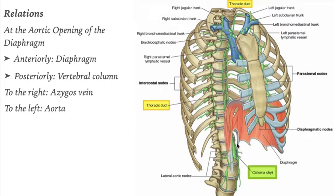At the aortic opening of the diaphragm, anteriorly we have the diaphragm, posteriorly the vertebral column, to the right side we have the azygous vein, and to the left side we have the aorta.